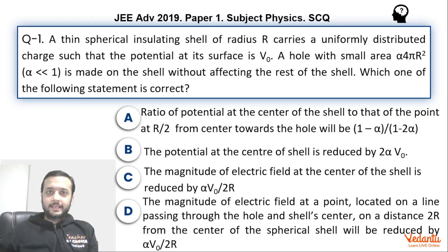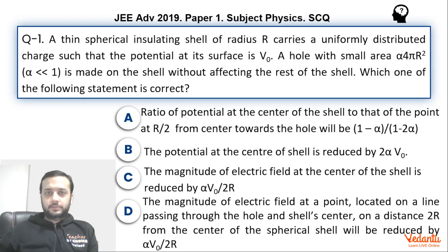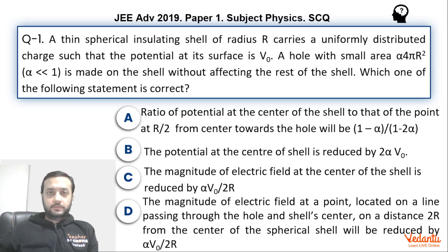Hi dear students, let's see this question that came in JEE Advanced Paper 1 Physics in the year 2019. This was a simple question from electrostatics based on the concept of electric field and potential of a hollow shell, and this was a single choice correct question. I am sure that almost all the students in India would have done this question.